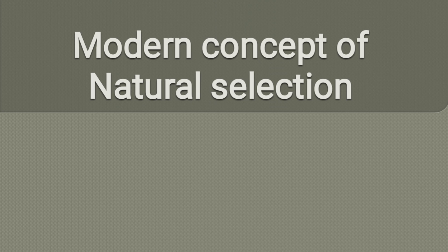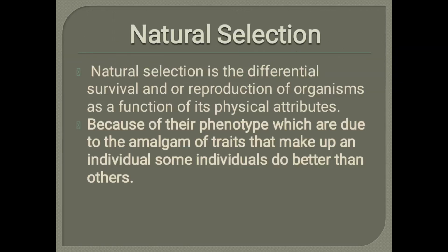Let's start. The scientist Charles Darwin proposed his theory about natural selection. Darwin نے natural selection کے بارے میں اپنی theory دی تھی۔ انہوں نے کہا تھا: Natural selection is a differential survival or reproduction of organisms. انہوں نے کہا کہ organism کو survive کرنے کے لیے nature select کرتی ہے، اور یہ selection مختلف طریقوں سے ہو سکتی ہے، reproduction میں بھی۔